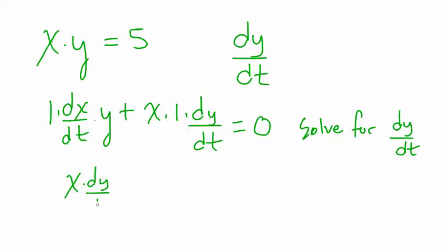We're going to take all of this over to the right-hand side of the equal sign. So we've got x times dy/dt is equal to negative. I'm going to write this y over here on the other side. Y times dx/dt.